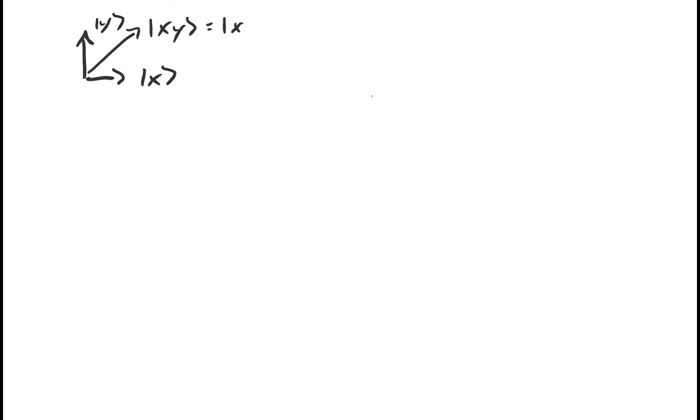We've seen that the group of three vectors x, y, and x+y is linearly dependent because x+y can be expressed as a linear combination of x and y. It should be pretty obvious that if we ever have a group of three vectors and two of them are x and y, then that group is going to be linearly dependent, because the third vector can always be expressed as a linear combination of x and y — since x and y span the plane.